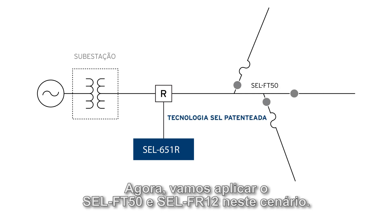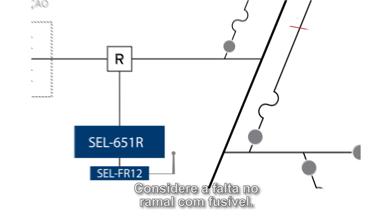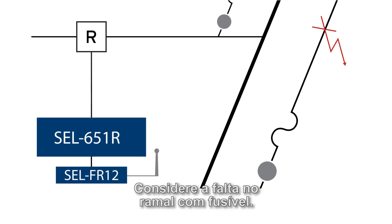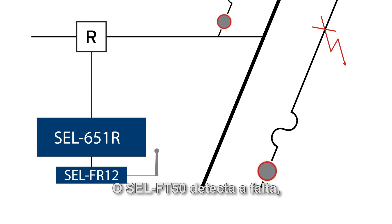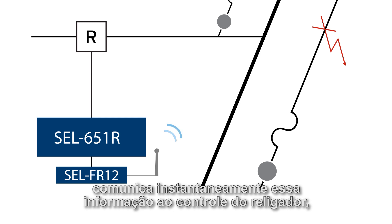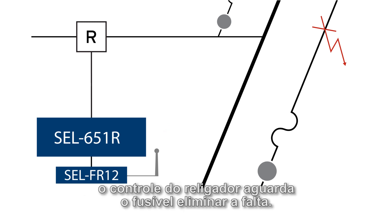Now let's apply the FT50FR12 to this scenario. Consider the fault on this fused line. The FT50 detects the fault instantaneously and communicates that information to the recloser control. The recloser control waits for the fuse to clear the fault.